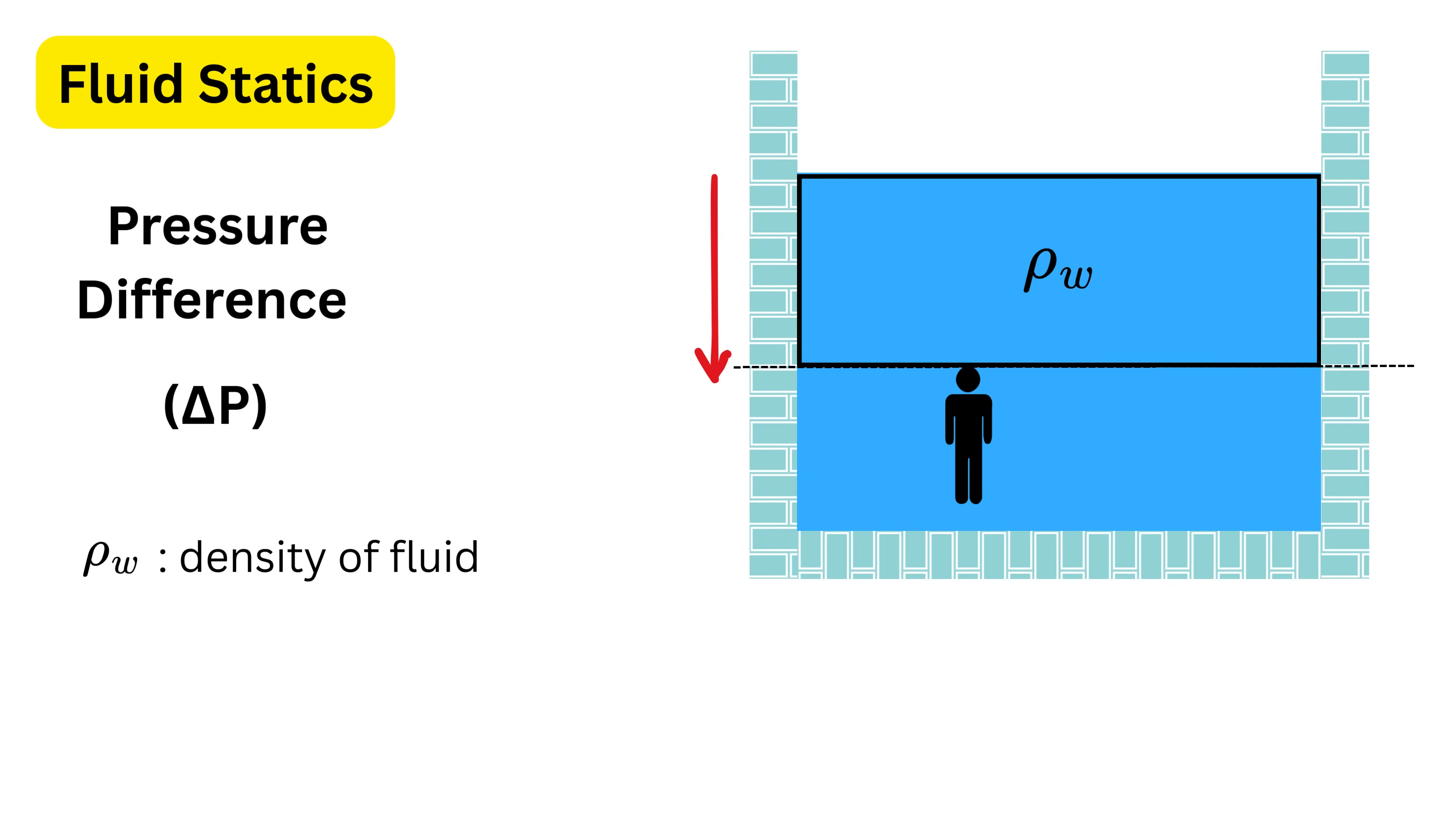First is the density of the fluid. Represented using rho sub w, a denser fluid has more mass packed into the same space, so its weight is greater. Because of this greater weight, a denser fluid creates more pressure at the same depth compared to a lighter fluid.